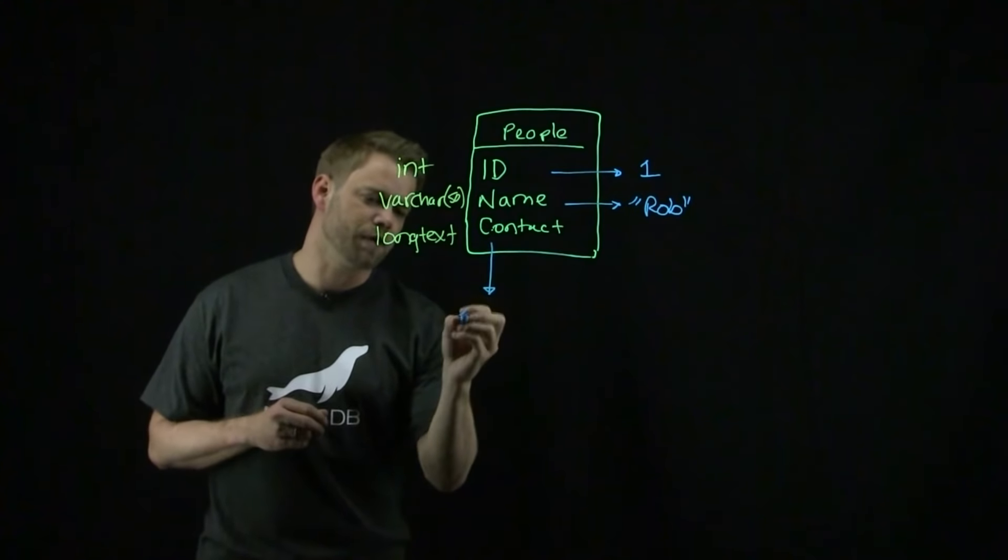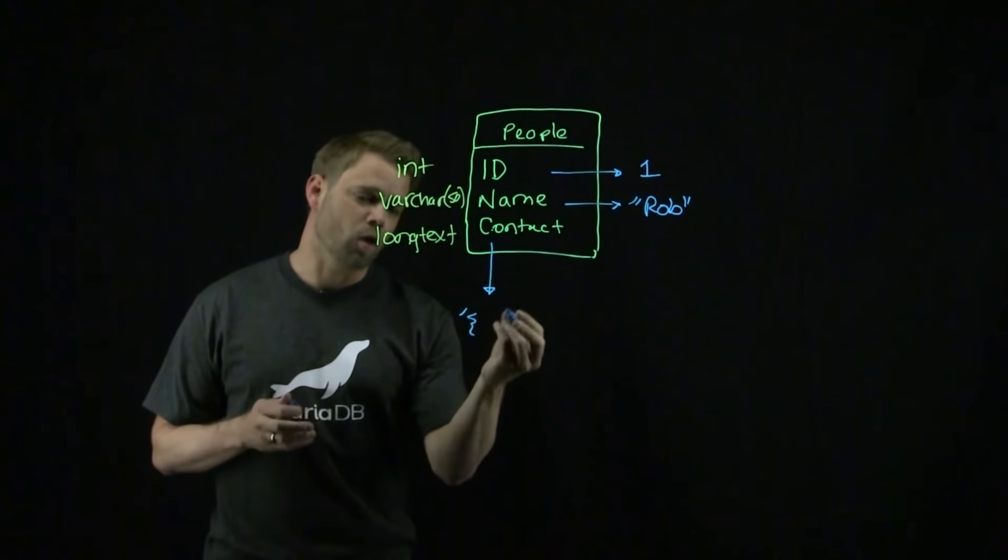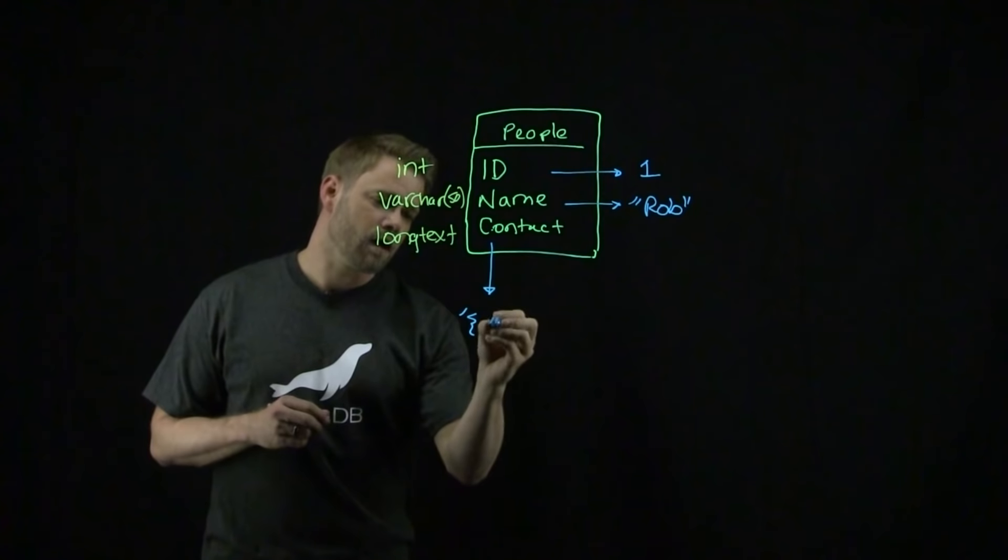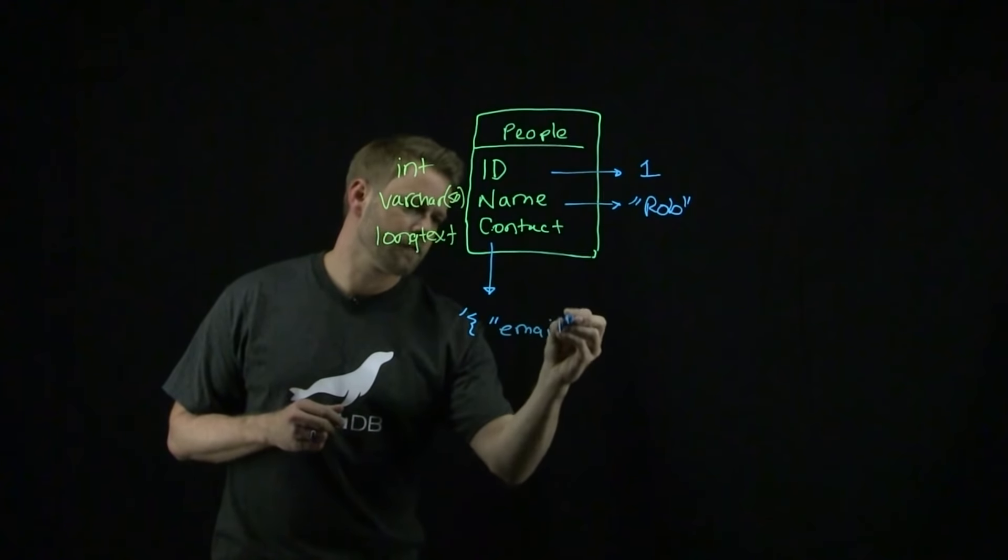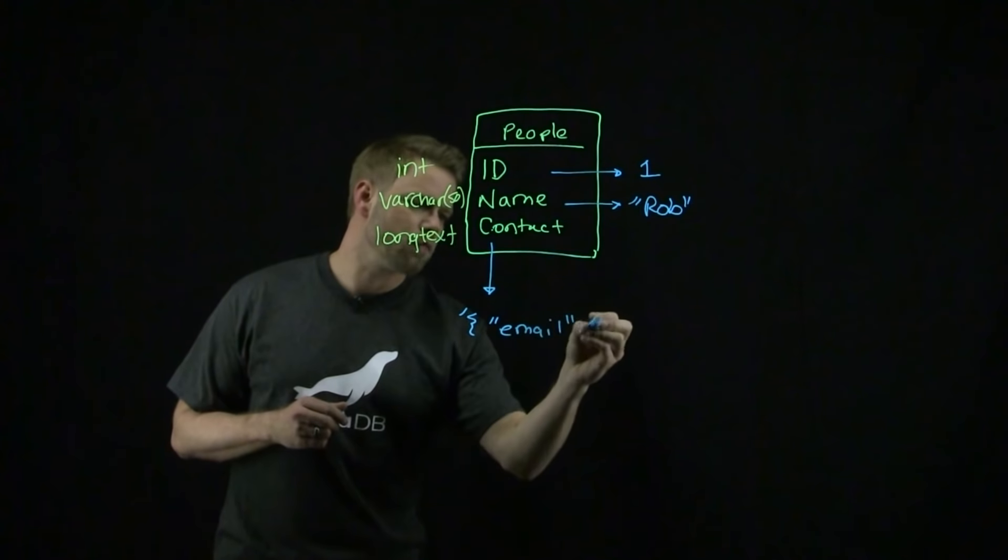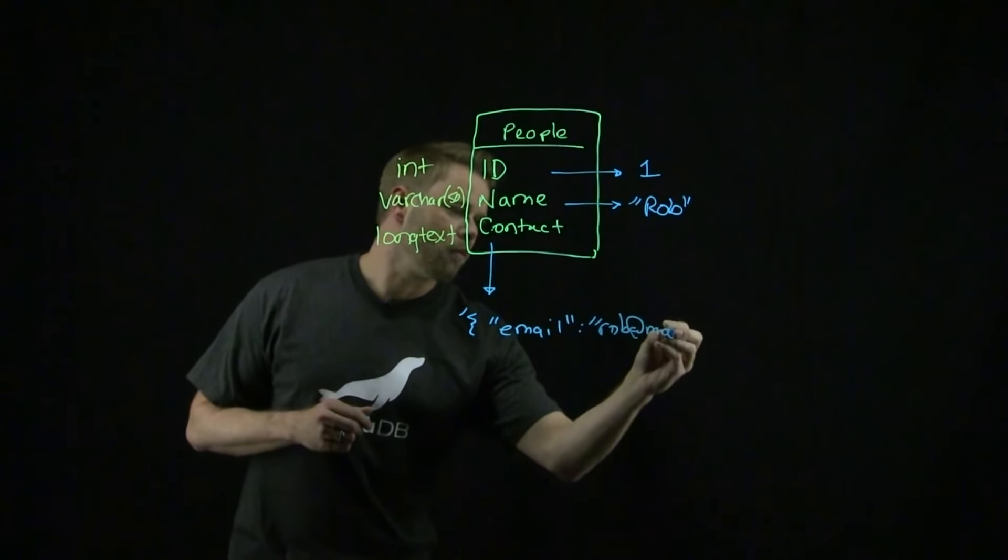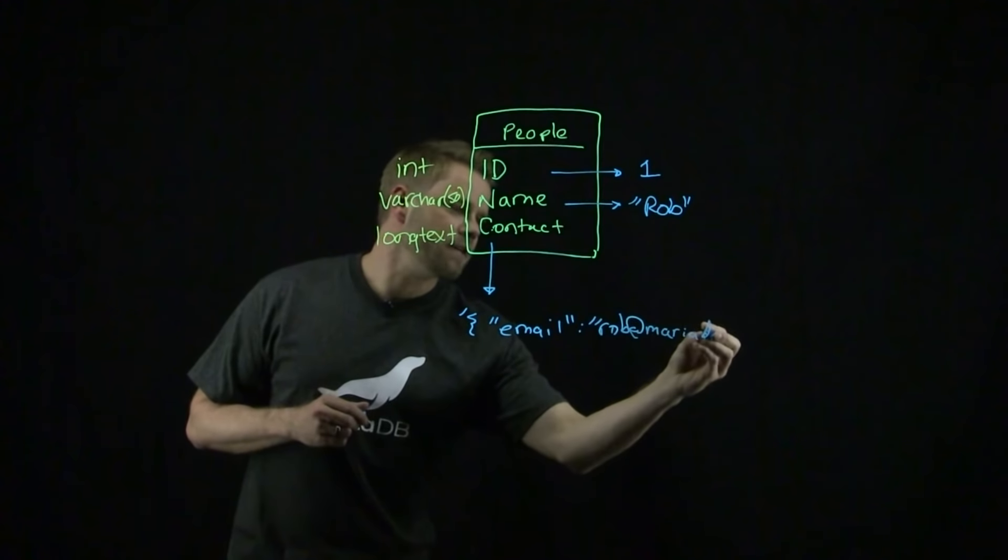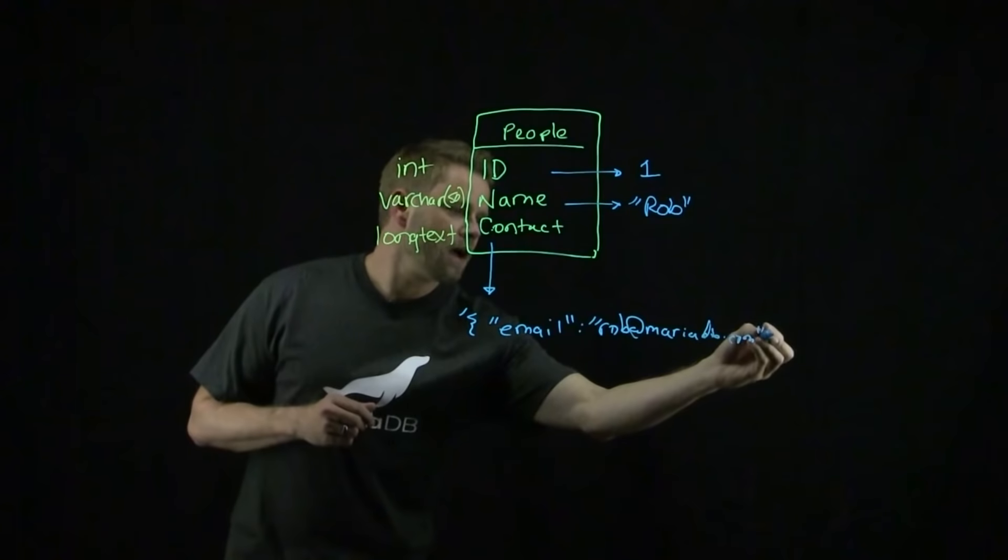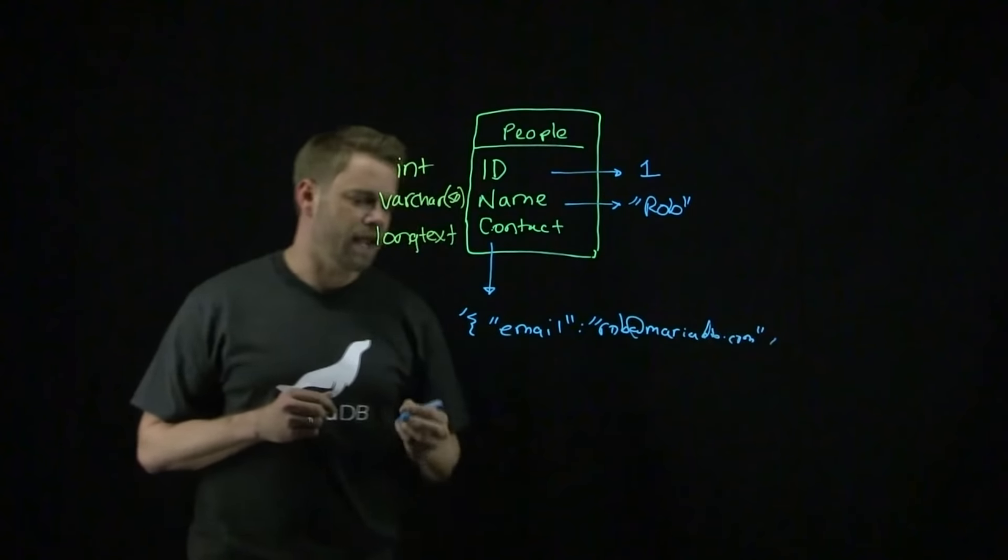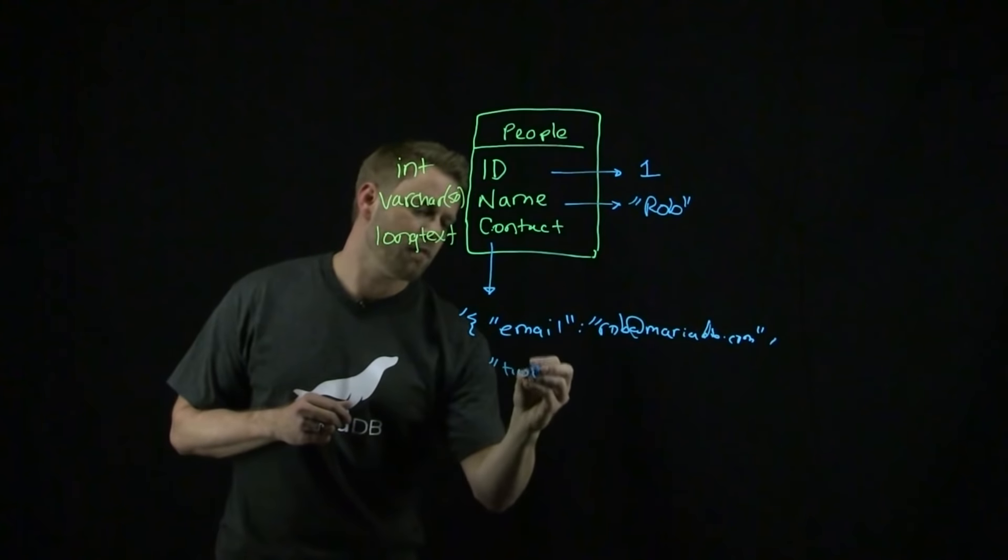You'll typically just put it in JSON format where I've got a quote, an opening brace. I'll put in email as the first information that I want to store, and we'll say Rob@MariaDB.com. I can then add a comma, and I'm going to add some more information. Maybe I want to add my Twitter handle.